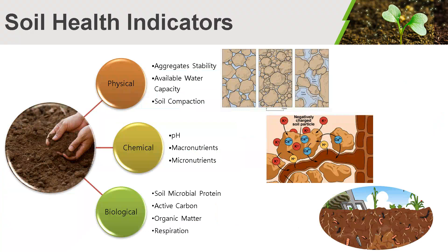Soil health indicators. Soil health is the capacity of soil to function as a vital living system to sustain biological productivity, maintain environmental quality, and promote plant, animal, and human health. This is a concept that characterizes the ability of a living soil system to perform functions such as supporting plant health. The idea of healthy soil must be conveyed through useful measurements known as soil health indicators that are sensitive to changes in soil processes and represent connections between soil biological, chemical, and physical properties. Attributes with a rapid response to natural or anthropogenic actions are considered good indicators of soil health.